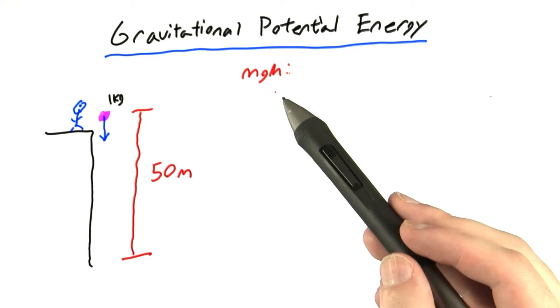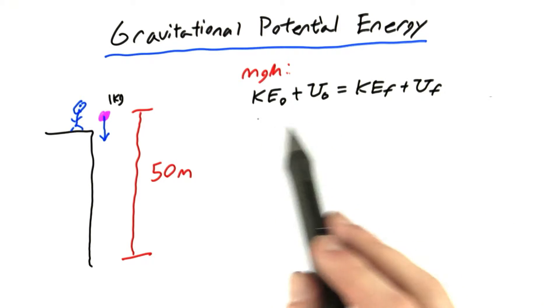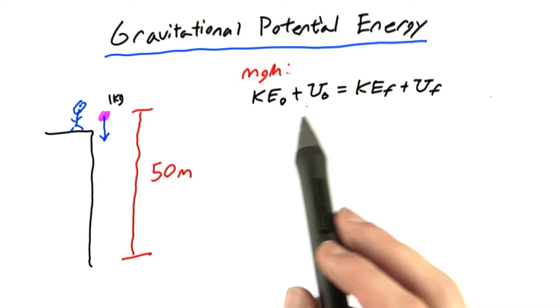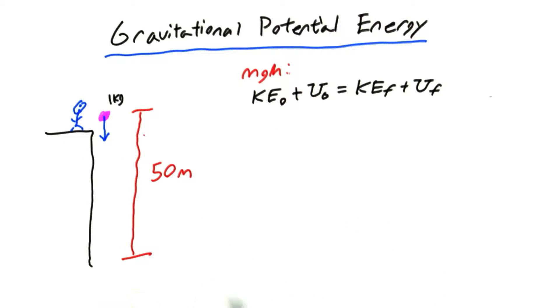Let's start by calculating the final kinetic energy using MGH for the gravitational potential energy. Once again we start with conservation of energy, the idea that the kinetic energy and the potential energy always add up to the same value no matter what point we're at in our experiment.